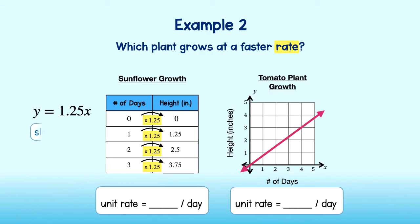I see the slope is 1.25, which means the constant rate of change or unit rate that the sunflower grows is 1.25 inches per day.